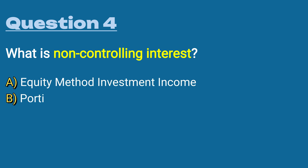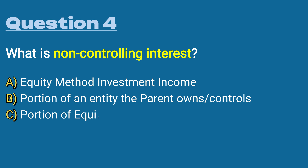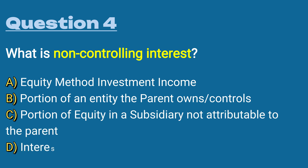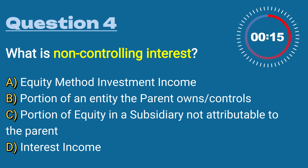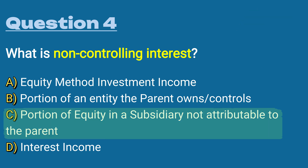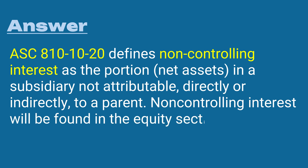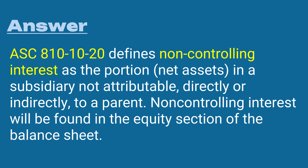A) equity method investment income, B) portion of an entity that the parent owns and controls, C) a portion of equity in a subsidiary not attributable to the parent, or D) interest income. The answer is C. ASC 810-10-20 defines non-controlling interest as the portion of net assets in a subsidiary not attributable directly or indirectly to a parent. Non-controlling interest will be found in the equity section of the consolidated balance sheet.